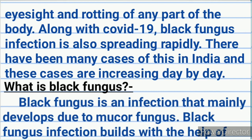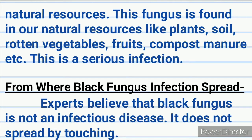Black fungus is an infection that mainly develops due to mucormycosis. Black fungus infection builds with the help of natural resources. This fungus is found in our natural resources like plants, soil, rotten vegetables, fruits, compost manure, etc. This is a serious infection.